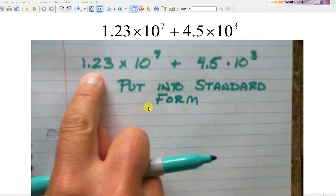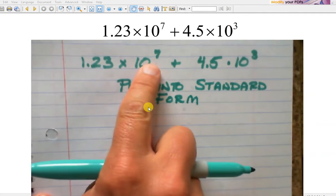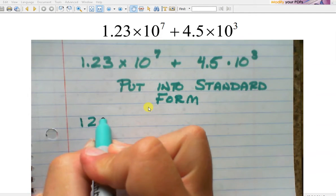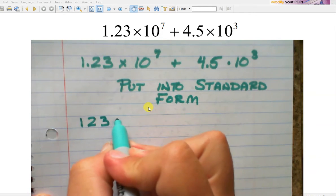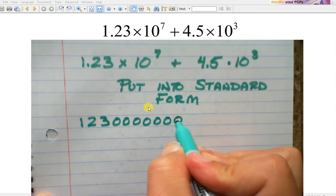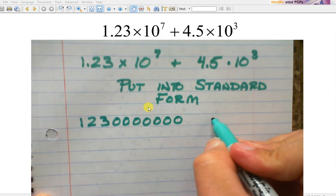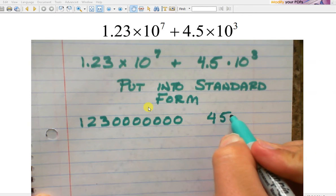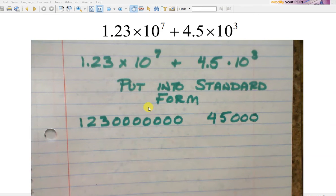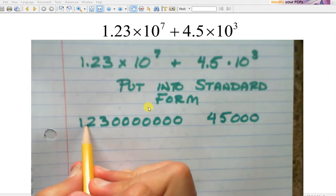So for this guy, I'm going to add seven zeros and make seven jumps. So I have one, two, three, one, two, three, four, five, six, seven. And this one, I'm going to add three zeros and make three jumps.